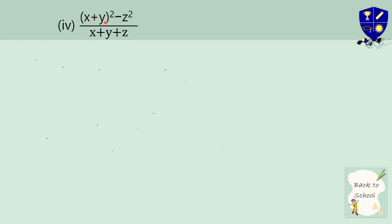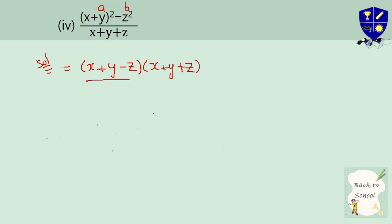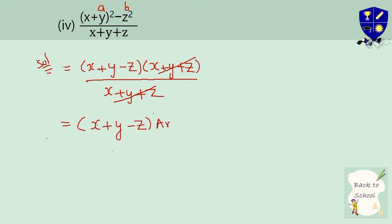Question number 4: (x plus y) whole squared minus z squared, divided by (x plus y plus z). The bracket (x plus y) is treated as one term 'a' and z is 'b', giving the difference of squares formula a squared minus b squared = (a minus b)(a plus b). This expands to (x plus y minus z)(x plus y plus z) divided by (x plus y plus z). Cancel (x plus y plus z), giving the final answer: x plus y minus z.